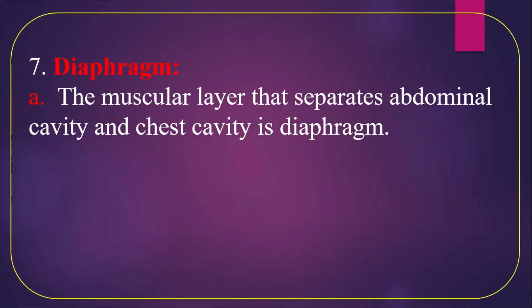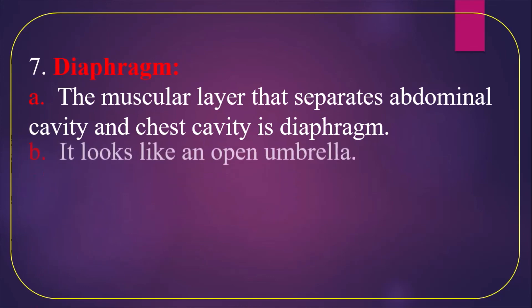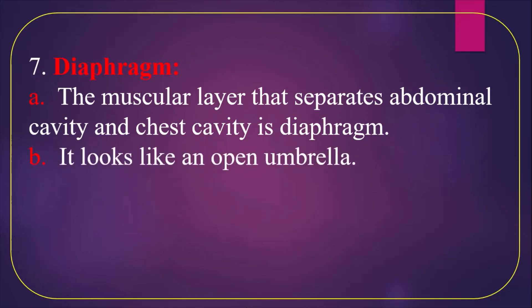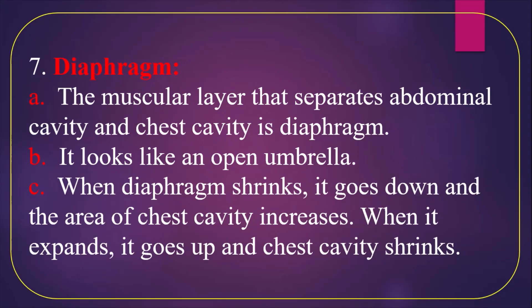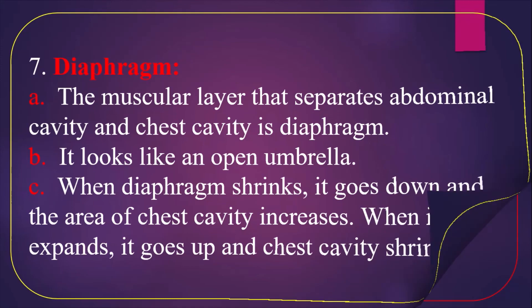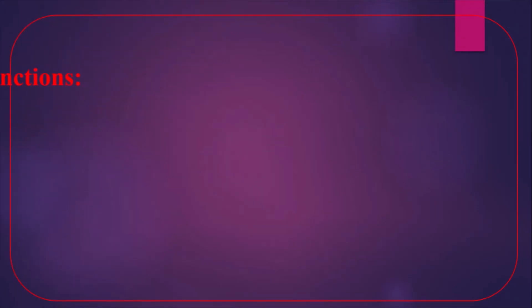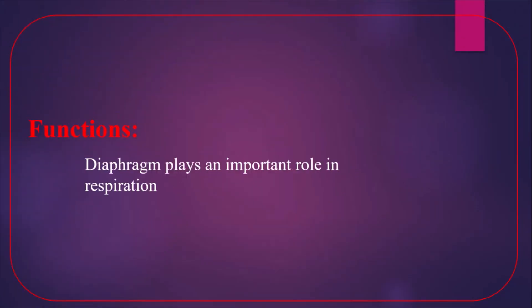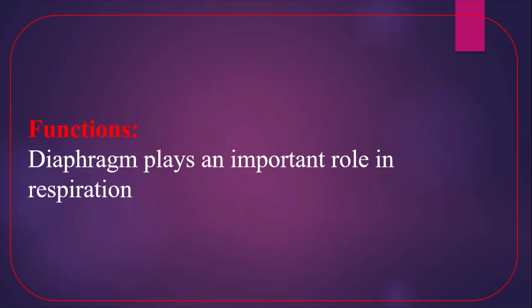The diaphragm is the muscular layer that separates the abdominal cavity and the chest cavity; it looks like an open umbrella. Function: when the diaphragm contracts it moves down and the area of the chest cavity increases; when it relaxes it moves up and the chest cavity decreases. The diaphragm plays an important role in respiration through its contraction and relaxation.